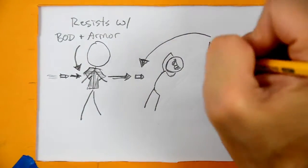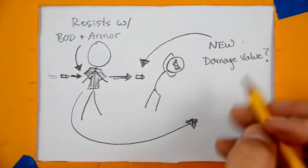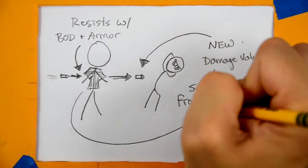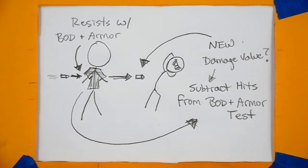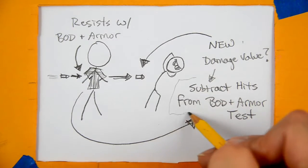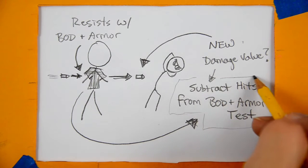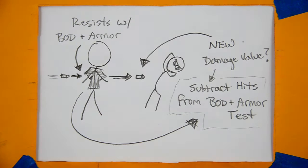Reduce the damage value of the attack by the number of hits on this roll. The character behind the meat shield must then resist this new, potentially lower, damage value. Remember to apply the damage to the meat shield if it is still alive while being used for cover.